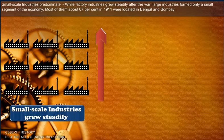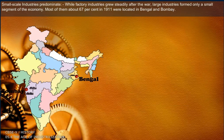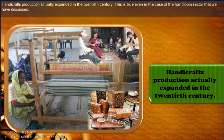Small-scale industries predominated. While factory industries grew steadily after the war, large industries formed only a small segment of the economy. Most of them — about 67% in 1911 — were located in Bengal and Bombay. Handicrafts production actually expanded in the 20th century.